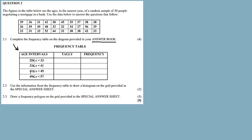So for the first answer: if you counted between 25 and 33 — meaning greater than or equal to 25 and less than 33 — the values that fall in this range include 29, 26, 31.